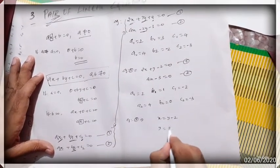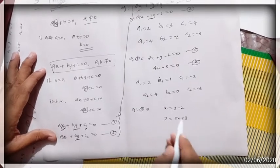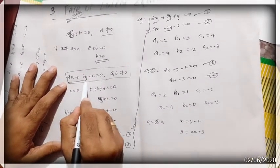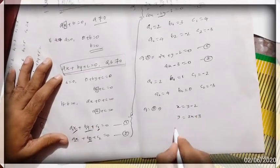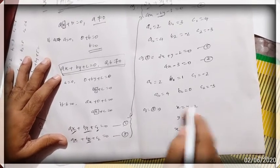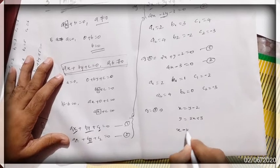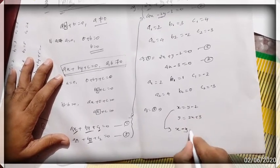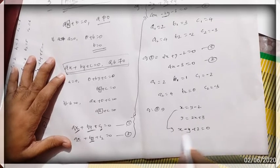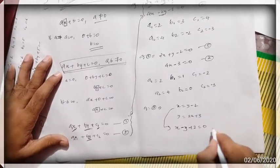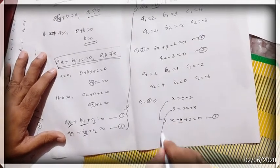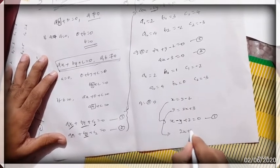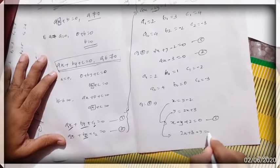Example 3: x = y − 2 and y = 2x + 3. First you have to convert these to general form — that is, ax + by + c = 0. For the first equation, bring y to this side: it becomes −y, and bring −2 to this side: it becomes +2. So the first equation in general form is x − y + 2 = 0.